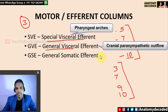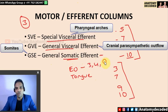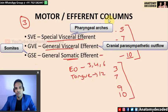General somatic efferent — here soma refers to the body wall. Muscles derived from the somites will be supplied by the general somatic efferent component. In the head and neck region these are the extraocular muscles, supplied by cranial nerves 3, 4, and 6, and the tongue muscles, supplied by the twelfth cranial nerve, the hypoglossal nerve.